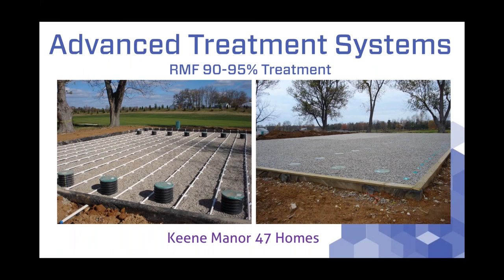Now we're going to take you through the advanced treatment system we installed as a cluster system in central Kentucky on 47 homes. Septic tanks will do approximately 25 to 50% treatment on a residential application. Recirculating media filters — which is what we're going to talk about today — like a lot of advanced treatment systems, will treat the effluent to 90 to 95% efficiency. So primary treatment from septic tanks gives 25 to 50%, while advanced treatment systems that are properly installed, designed, and maintained give 90 to 95% treatment efficiency.